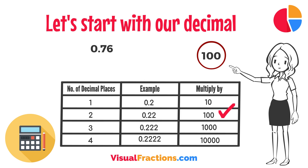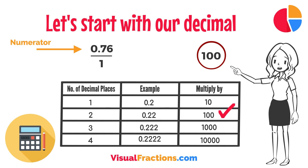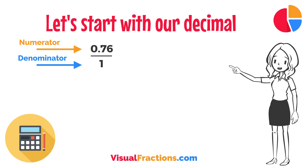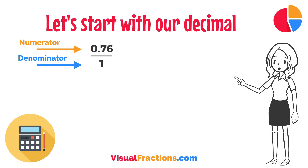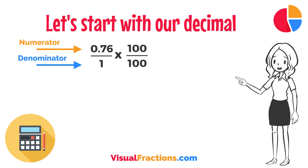To convert this decimal into a fraction, you initially put it over one, essentially treating the decimal as the numerator in a fraction where the denominator is one. This sets up the conversion process where we multiply both the numerator, the decimal, and the denominator, 1, by 100 because there are two decimal places.